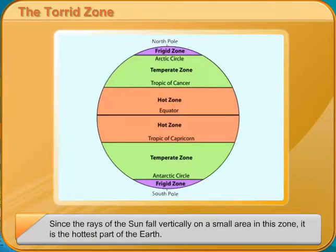The areas in the Torrid Zone which are near the equator are the equatorial regions. The areas in the Torrid Zone which are near the two tropics are the tropical regions.